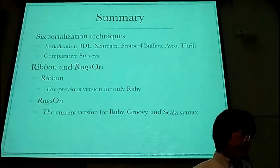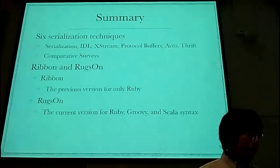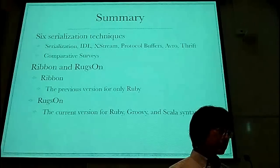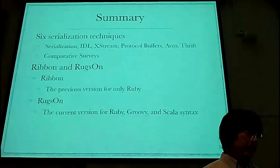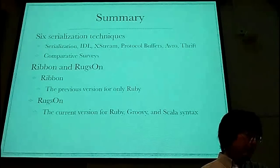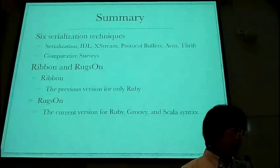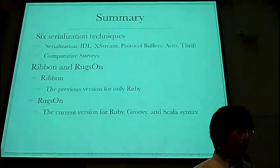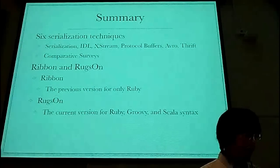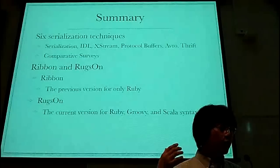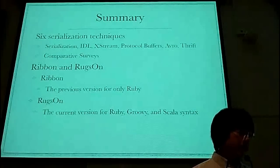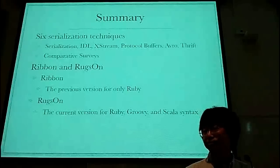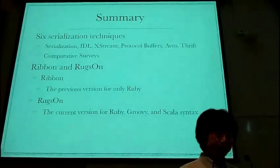To sum up — I talked about six related serialization techniques: Java serialization, IDL, XStream, Protocol Buffers, Avro, and Thrift. I talked about comparative surveys and about Ribbon, the previous version for Ruby only. I am now developing software tools for Ragzone and will release them in the near future — December, I hope. That's all. Thank you very much.